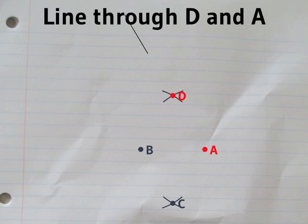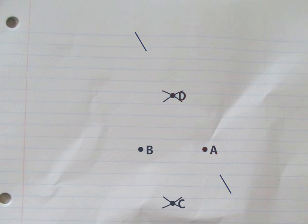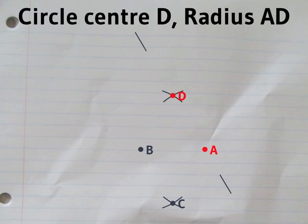Now we'll draw the line through A and D. Still with the same radius, we'll draw another circle centered on D.